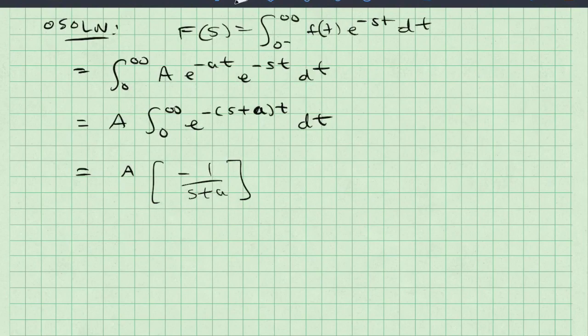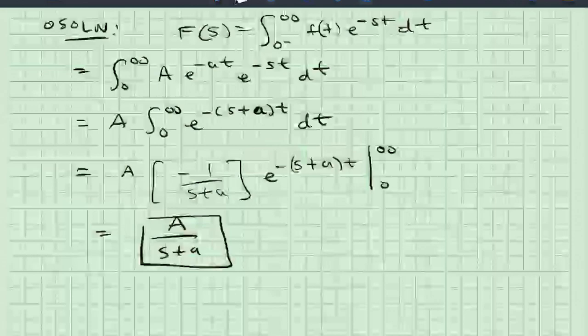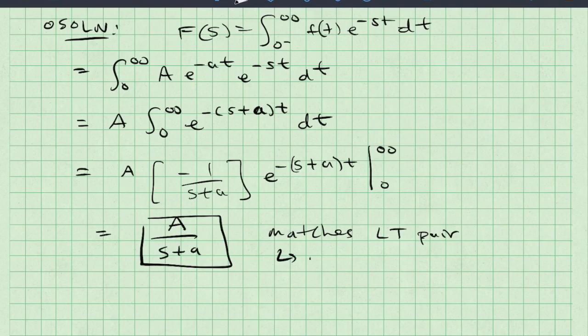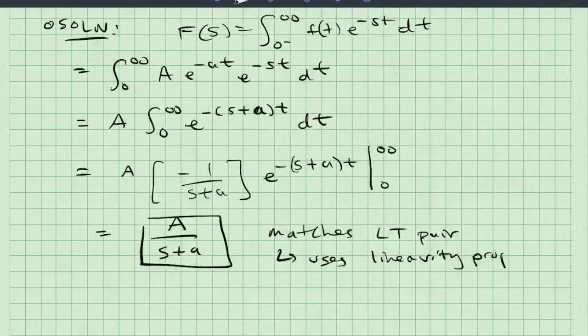Executing this integral, I'll get A multiplied by negative one over s plus a e^(-(s+a)t), and that whole thing is going to be evaluated between zero and infinity. Taking e to the negative infinity is zero. Taking e to the zero is one. And so I'm left with A/(s+a) which matches the Laplace transform pair on my table. It also uses the linearity property because I've multiplied by a scalar value A. Multiplying by a scalar value A in the time domain is the same thing as multiplying by a scalar value A in the Laplace domain.